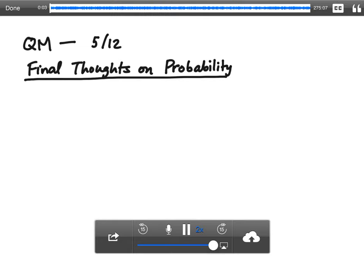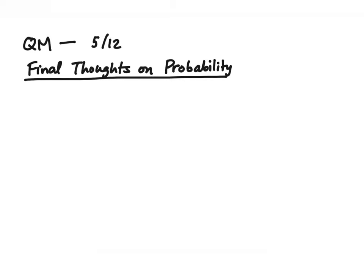In this video, we'll finish up our study of abstract probability theory, and then in the next one, I'll talk about operators and quantum mechanics — where they come from, why we think that they should be there. That'll get us back into physics, and then we'll continue on from there.